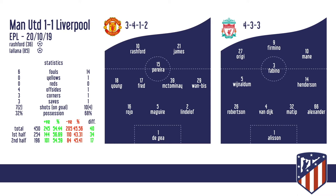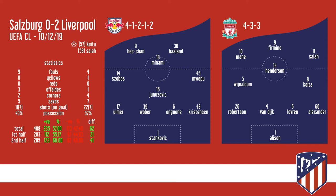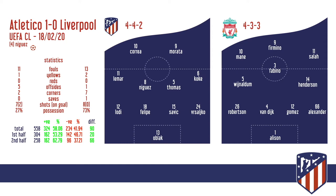Back in the UEFA Champions League: Liverpool 1-Napoli 1 on the 27th of November, 4-3-3 again. Then Salzburg-Liverpool, UEFA Champions League, 4-3-3 — Liverpool won 2-0 away from home. Total successful passes: 408, of which 57% were positive and 42% were negative (173 passes). The final game was our last game against Liverpool, which we won 1-0, set up as a 4-4-2. Despite only 27% possession, we managed to come away with a win.